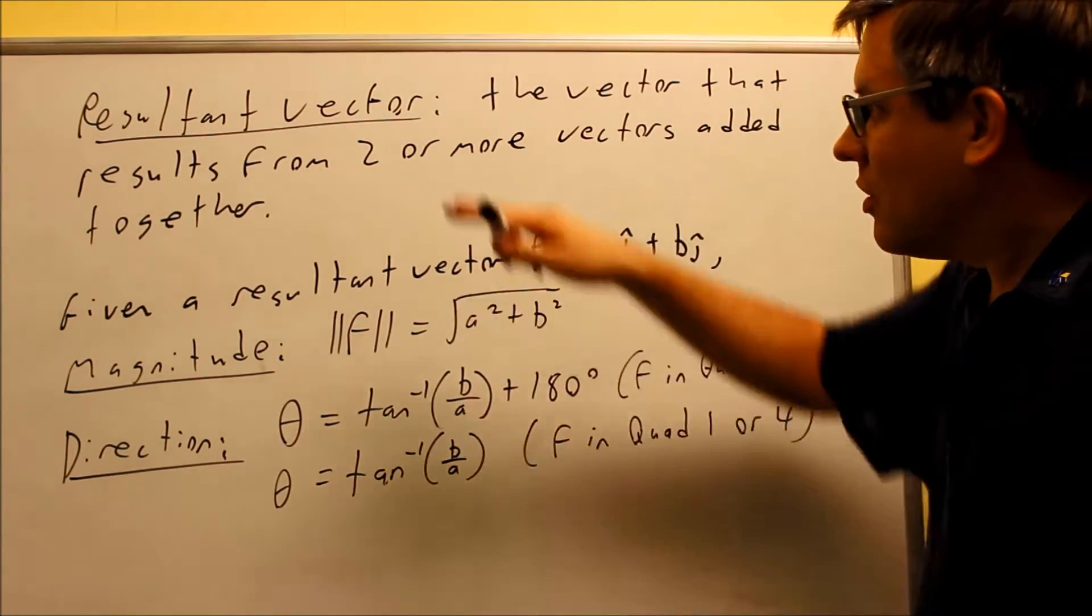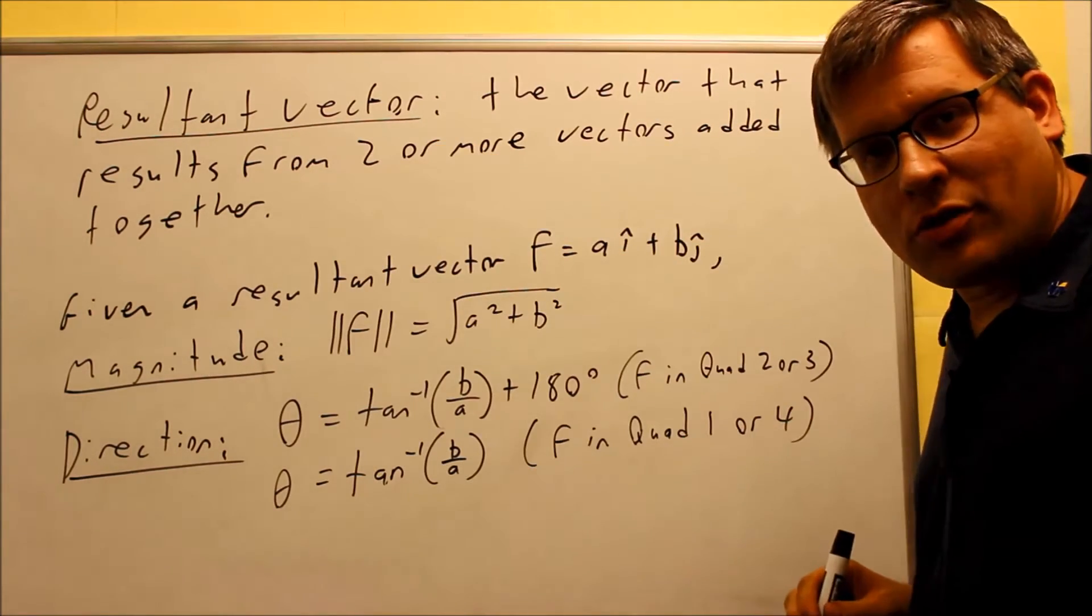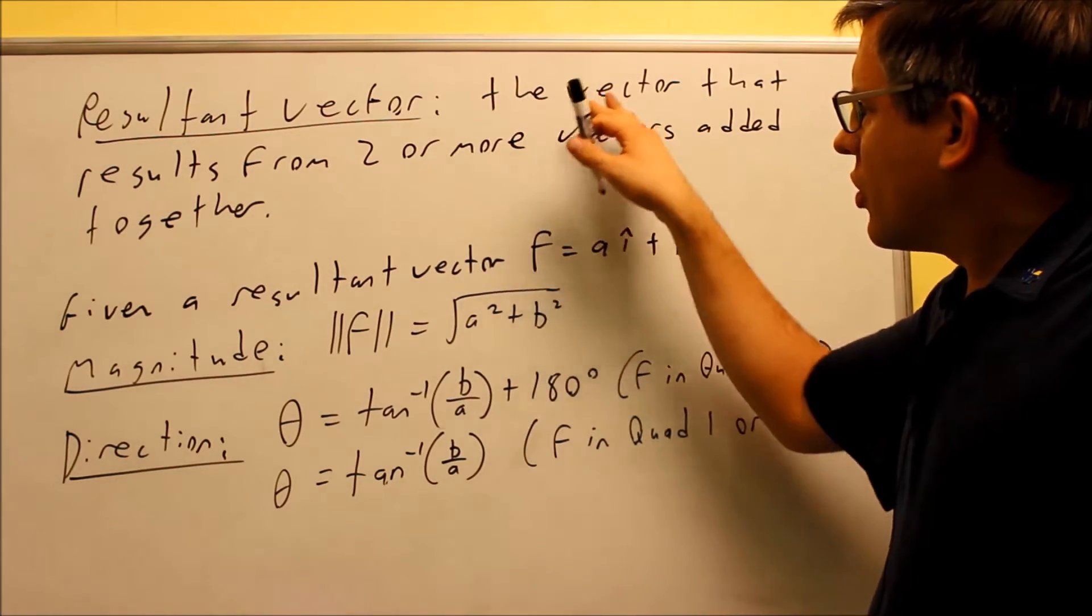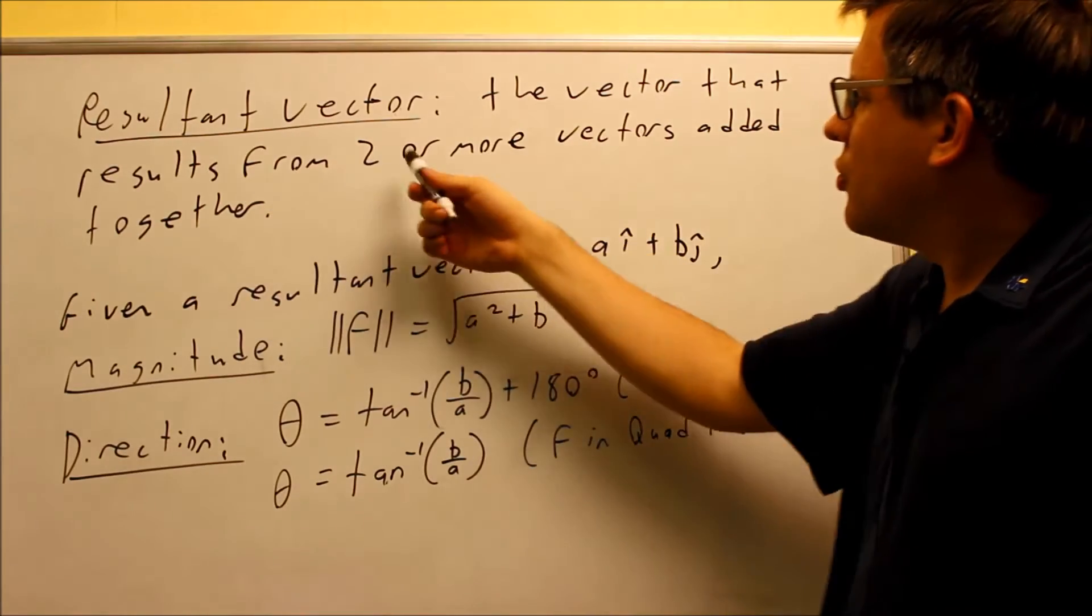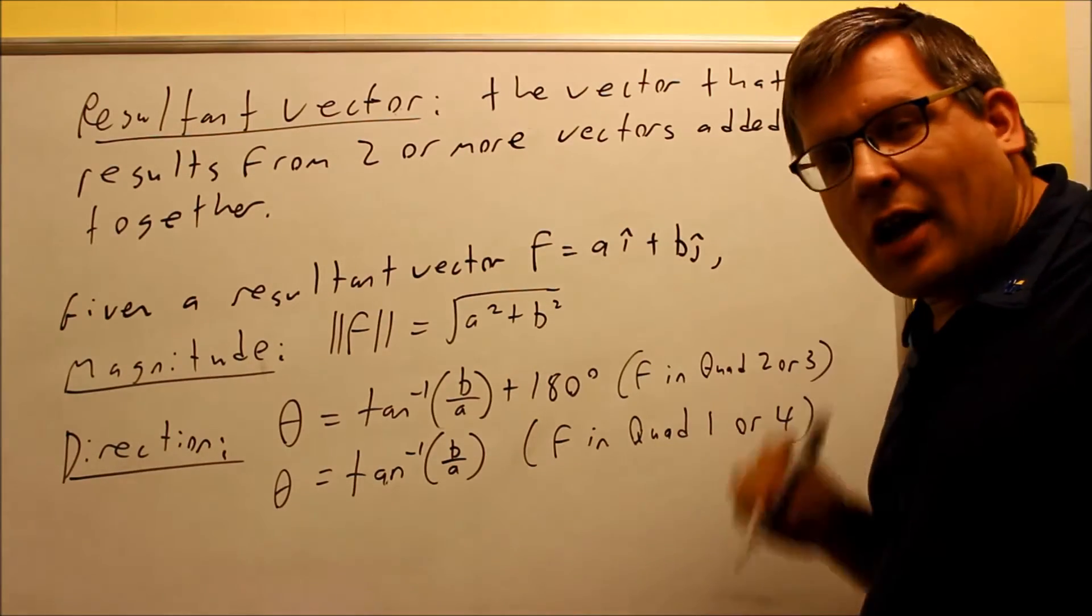Okay, so here's a couple more concepts. We have a concept of the resultant vector, and the definition is the resultant vector is basically going to be the vector that results from two or more vectors being added together.